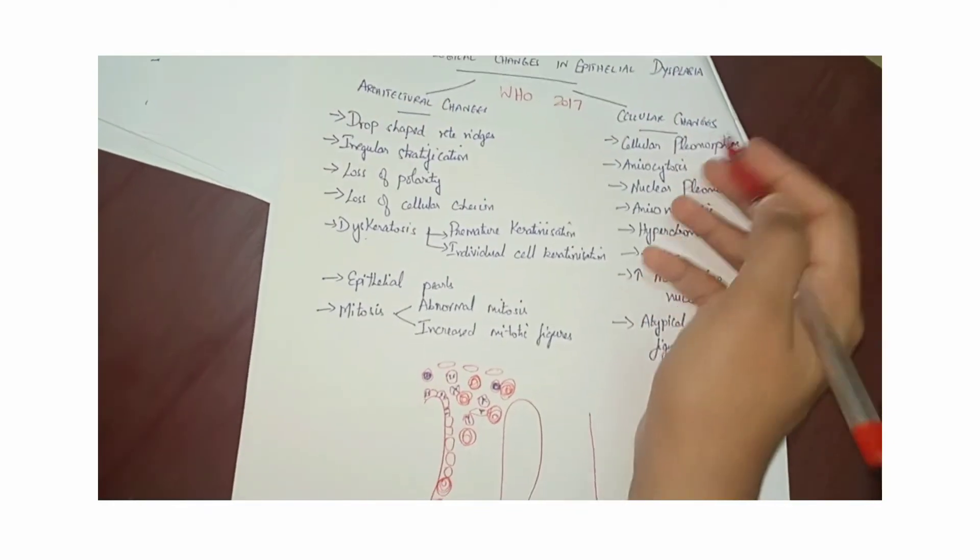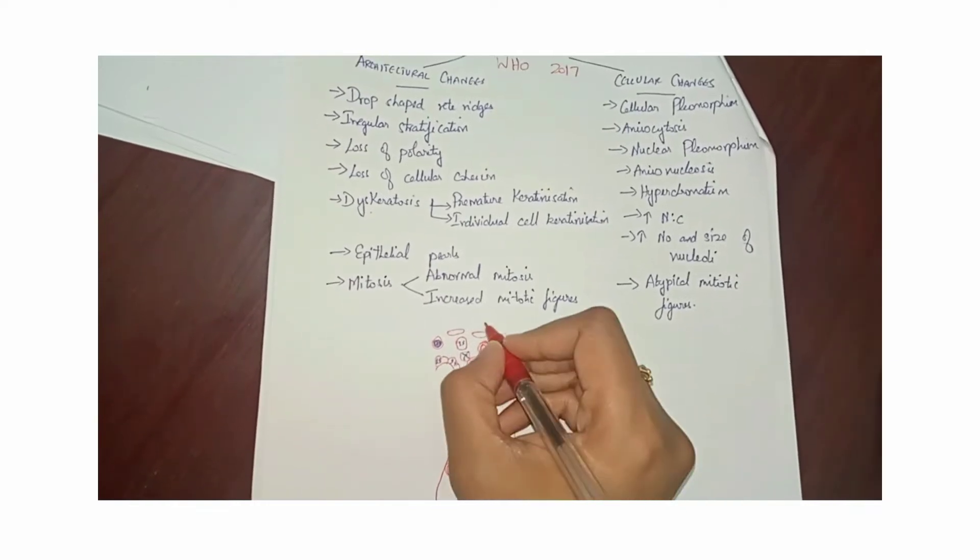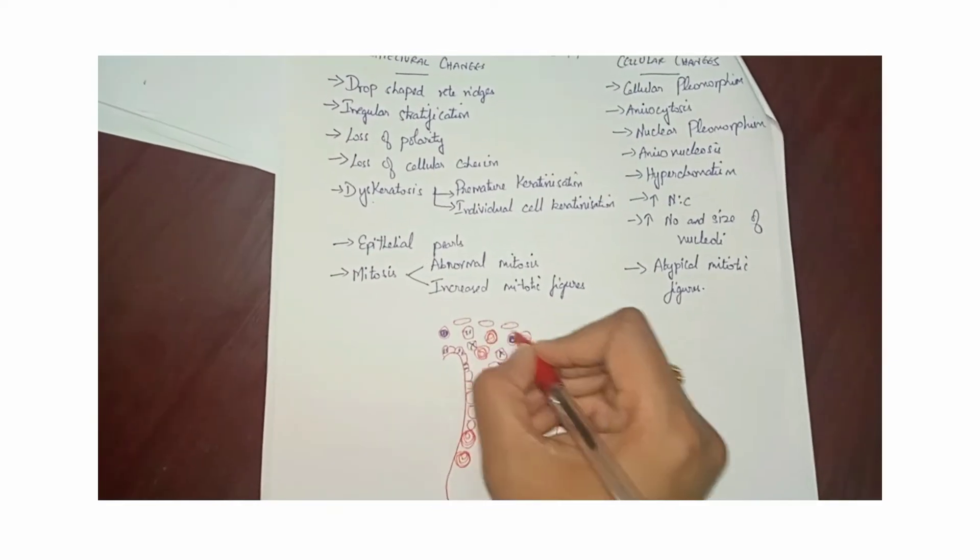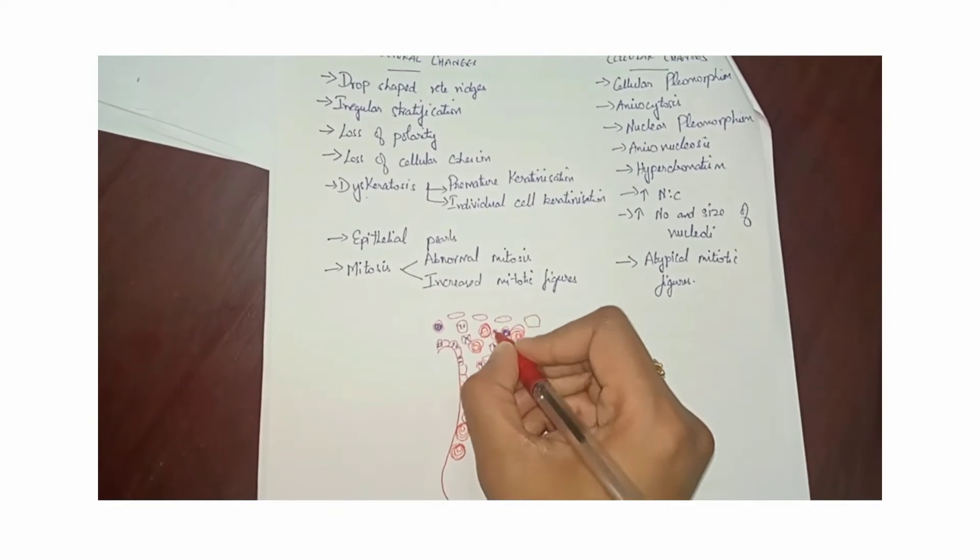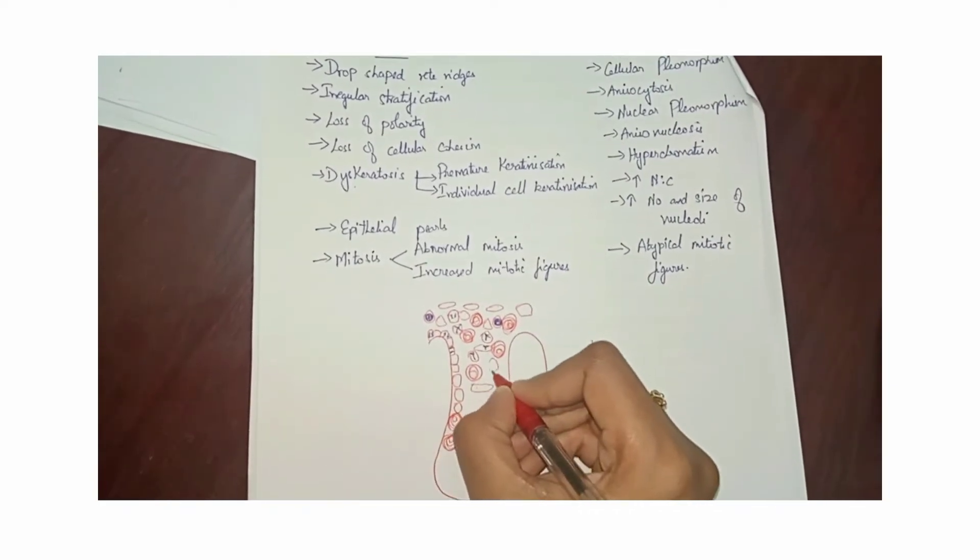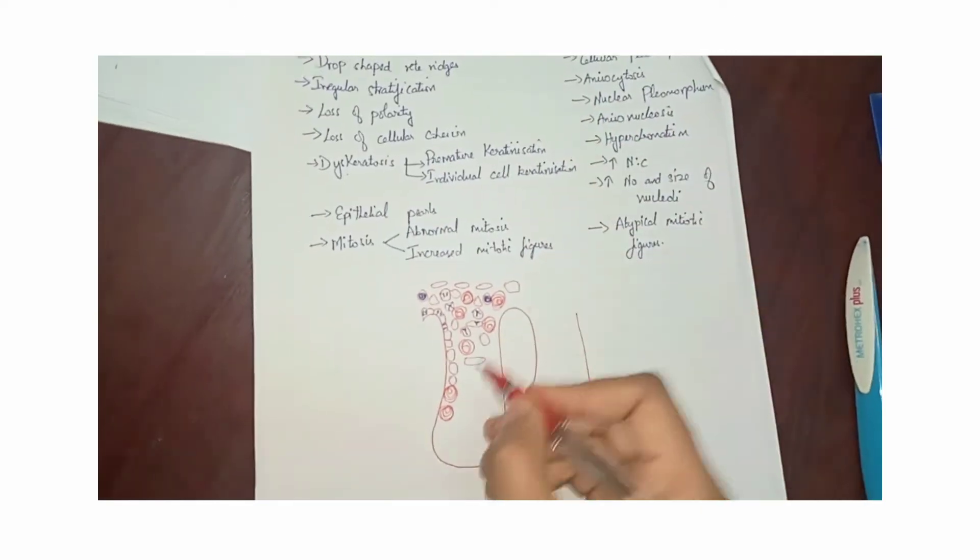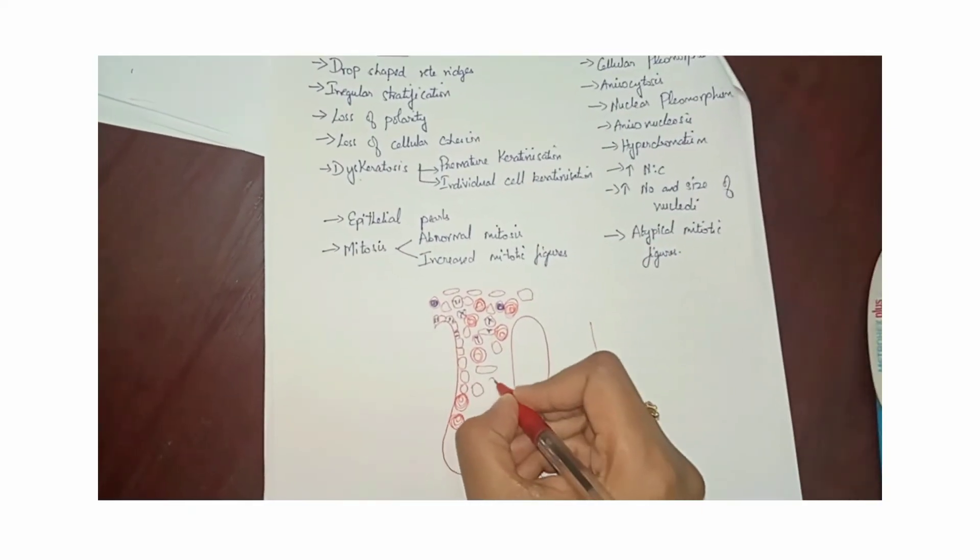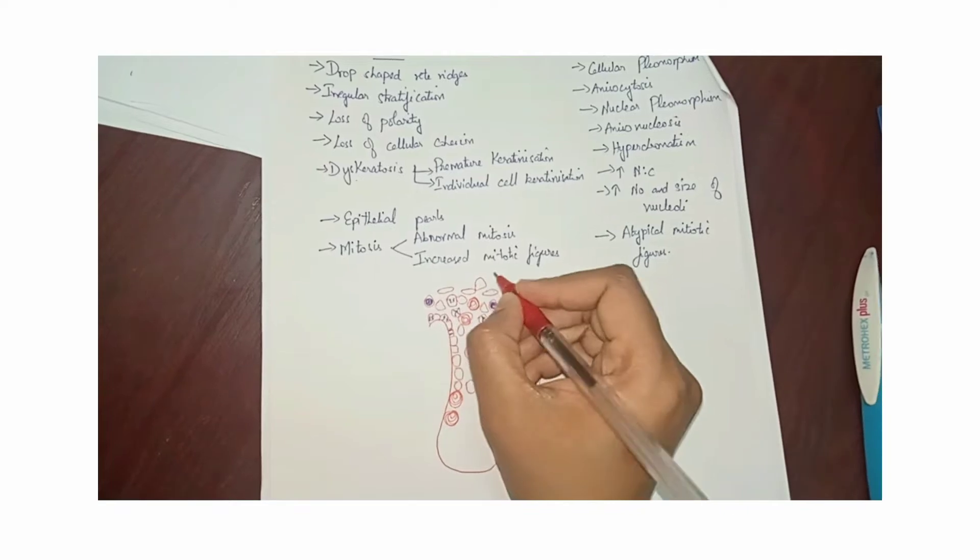The other cellular changes present is cellular pleomorphism. That is, the cells can be of any shape, not just the cuboidal and the polygonal shape. They can have any shape and they can also have any size, as anisocytosis.